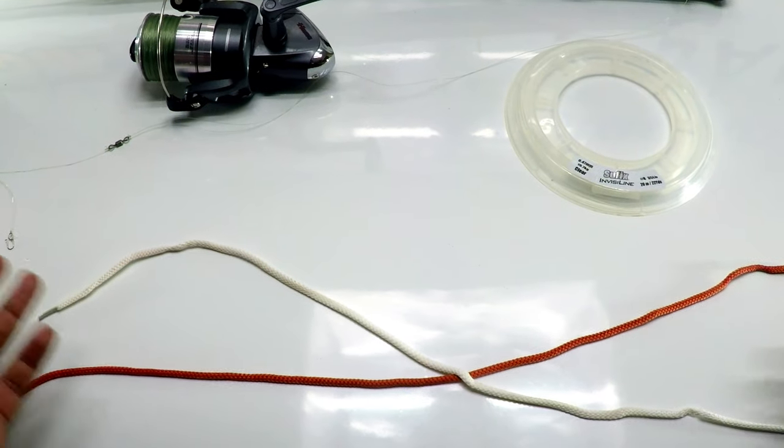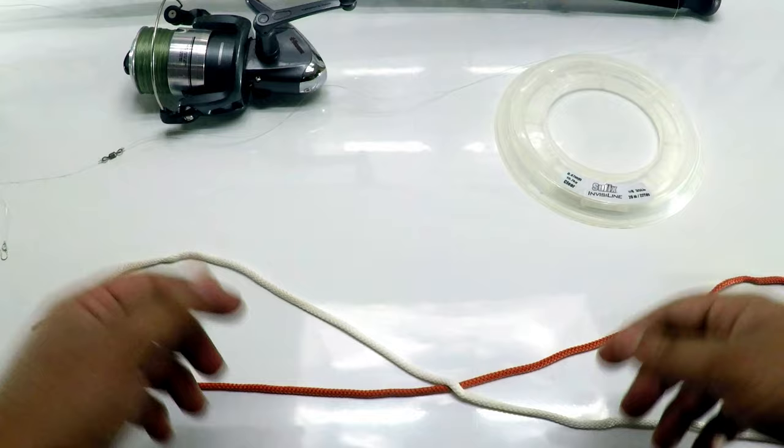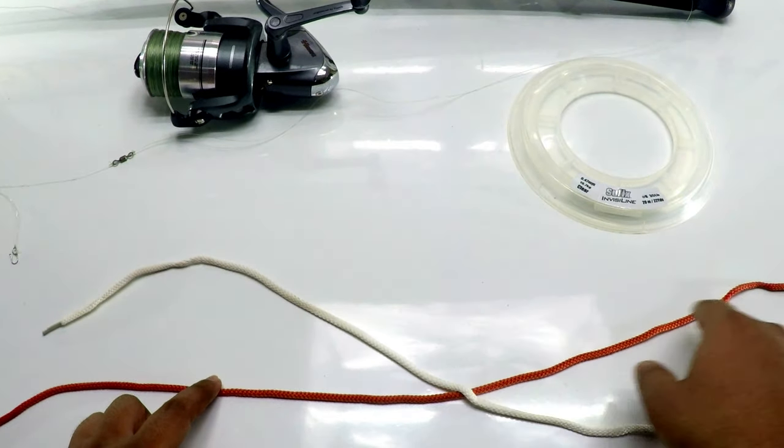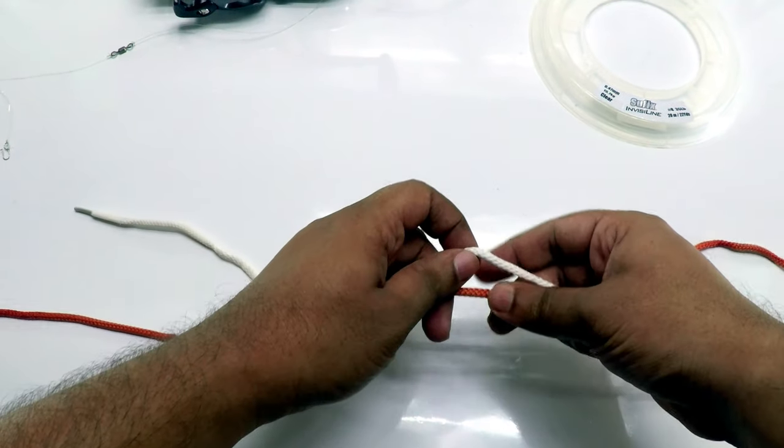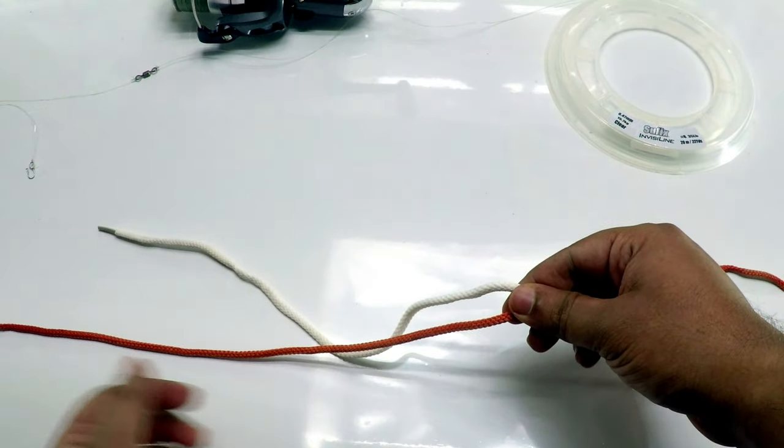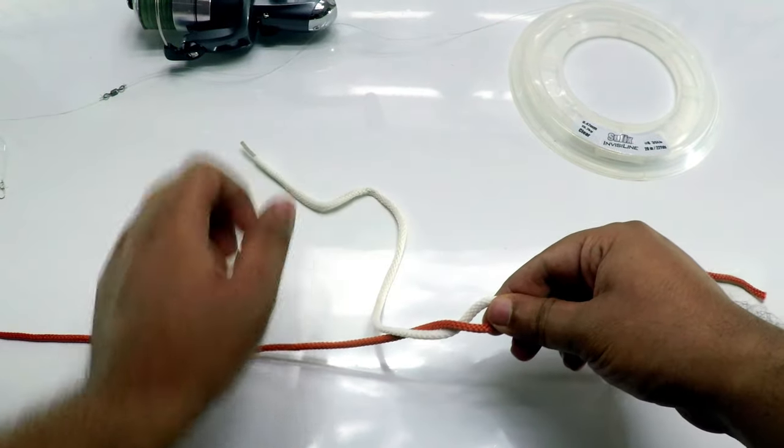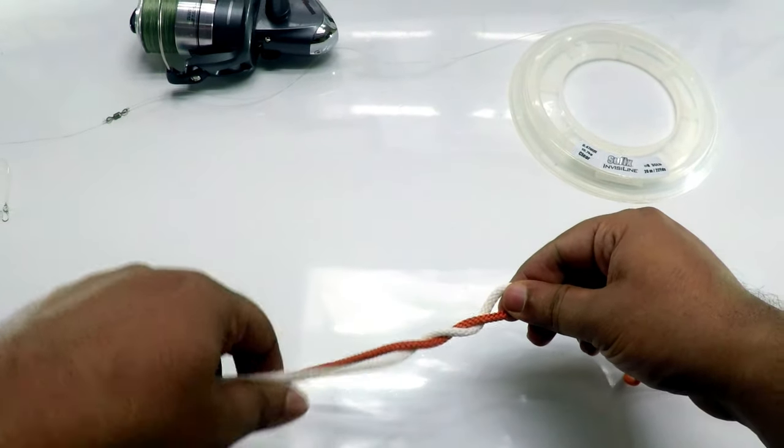Take ample line on both sides, then hold the line with two of your fingers and twist it on this side three to four times.